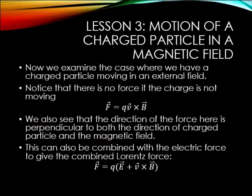So now we examine the case where we have a charged particle moving in an external magnetic field. Our force equation here is given as F equals QV cross B. Again, we have that cross product involved. Notice there is no force if the charge is not moving. If you just put a charge in a magnetic field, it won't move. This is contradictory to what happens in an electric field. An electric field will always accelerate a charged particle. Also, we see that the direction of the force here is perpendicular to both the magnetic field and the direction of the charged particle.